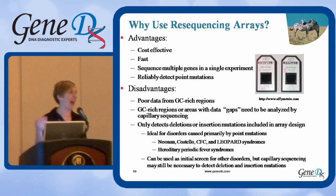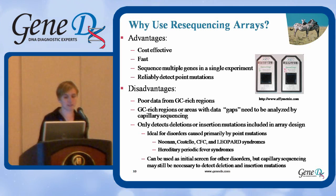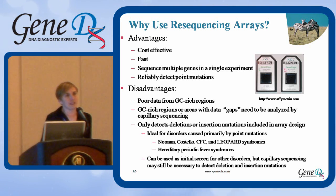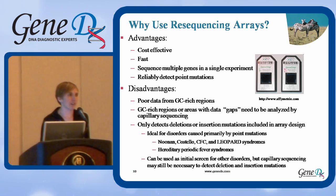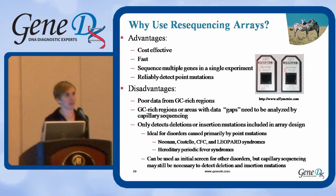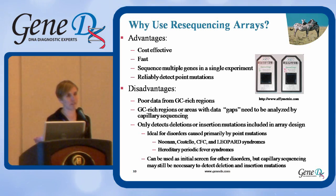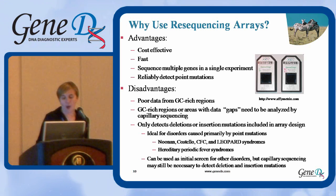Familial Mediterranean fever and related disorders would be another example — think of these as disorders due to activating mutations or gain-of-function mutations. This technology could be used as an initial screen for other disorders where you do see frame shift mutations, but be aware that if your patient's result is negative, they may still need follow-up with a different sequencing technology that can identify previously unreported frame shift mutations.